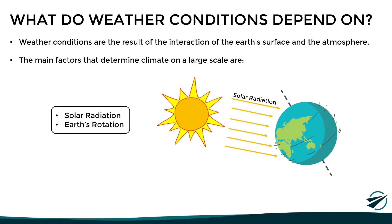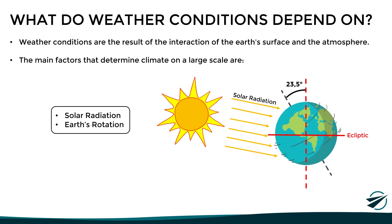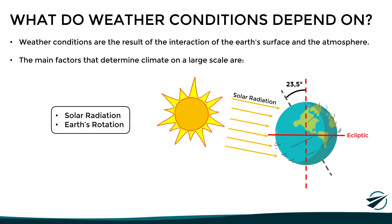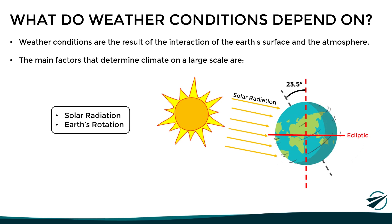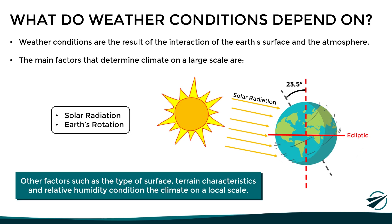The Earth's axis of rotation is tilted in relation to the ecliptic or orbital plane around the Sun, which greatly affects the distribution of solar radiation along the year and generates periodic climatic changes in the northern and southern hemispheres — known as the seasons of winter, spring, summer, and autumn. Other factors such as the type of surface, terrain characteristics, and relative humidity also condition climate on a local scale.